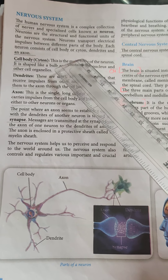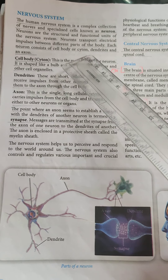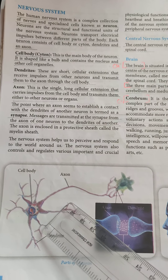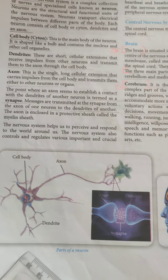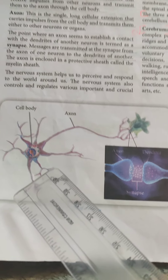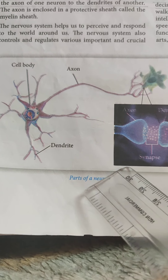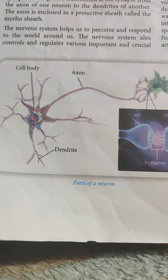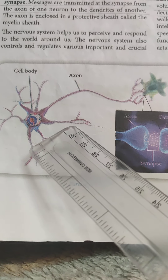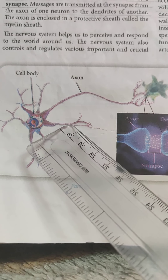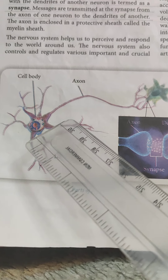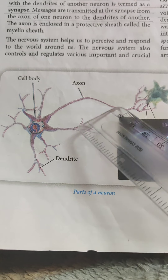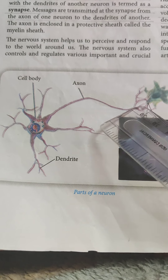Nervous system is a complex collection of nerves and specialized cells which are known as neurons. Neurons transport electrical impulses between different parts of the body.